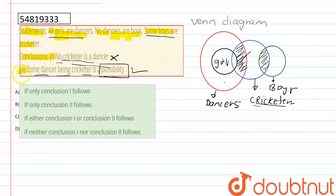So, that's why the conclusion 2 is right. Conclusion 1 is wrong. So, option B is the right answer. Only conclusion 2 follows the given statement. So, the answer is our option B.